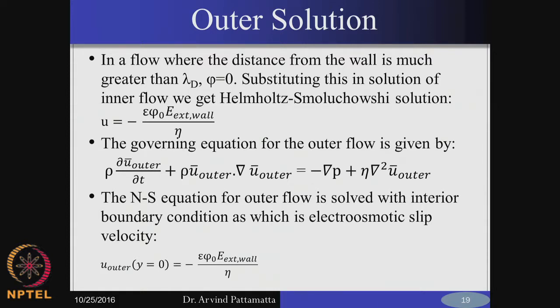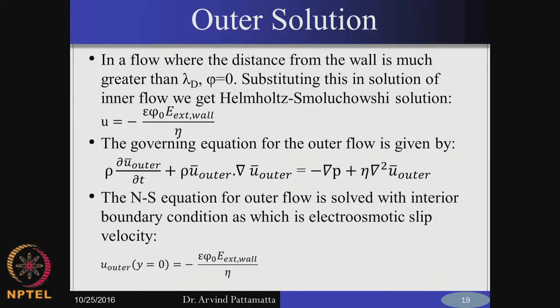In the outer flow, it is electrostatically neutral, so you do not have the direct effect of the electric field on the outer flow. However, at the edge of the EDL, you have an induced motion due to the field, given as a slip boundary condition to the outer flow. For the outer flow, we just solve the Navier-Stokes equation without any Coulomb forces but provide this as the boundary condition at y equal to 0. We assume y is shifted from the actual wall to the edge of the EDL by the order of a few tens of nanometers, and the velocity profile at that location is given as the slip velocity. For the simple case of Couette flow between two parallel plates both experiencing the same Coulomb force, the entire profile will be the same as the boundary profile — steady state, fully developed, without any pressure gradient.